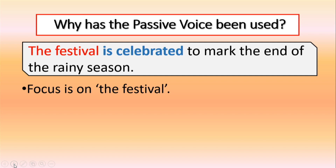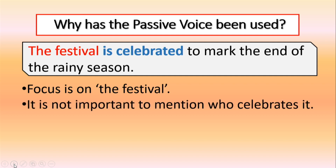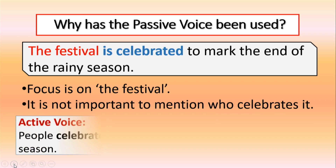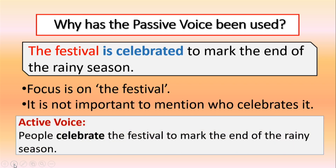He has placed the festival at the start of the sentence. In addition, most people in Thailand celebrate this festival, so it is not important for him to mention who exactly celebrates it. In the active voice, the sentence would have read: people celebrate the festival to mark the end of the rainy season. In the active voice, the emphasis would have been on people. Since Winsley did not want to emphasize on the people, he did not use the active voice.